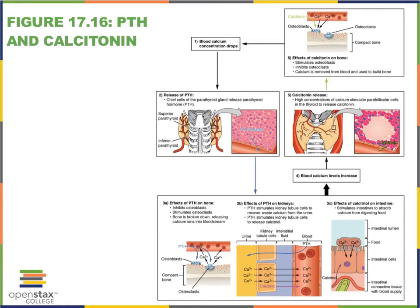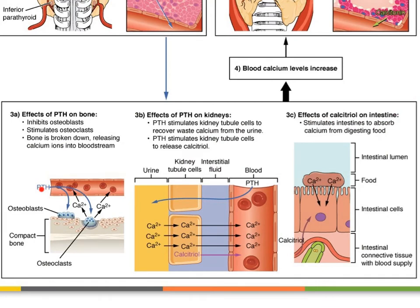This hormone affects three different areas of the body: bone tissue, the kidneys, and the small intestine. In bone tissue, PTH will leave the bloodstream, inhibit the osteoblasts, and stimulate the osteoclasts — those multinucleated, macrophage-like cells. When osteoclasts are stimulated, they allow for the disassembly of bone tissue, leading to the release of calcium into the bloodstream, returning calcium levels back to homeostatic levels.